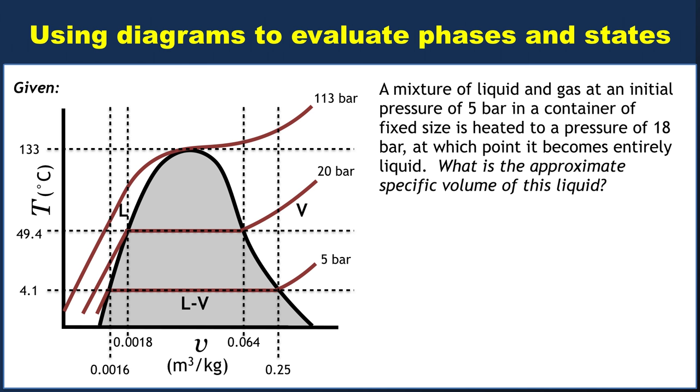But we also know that when we heat to a pressure of 18 bar, then suddenly our system is entirely liquid. What does it mean when something becomes entirely liquid? Well, at the moment that it becomes entirely liquid, we know that we're on the left side, the left boundary specifically, of the vapor dome. In other words, we have to be somewhere over here in the final state.